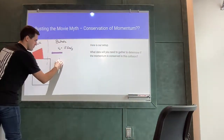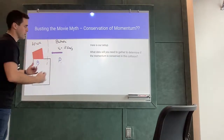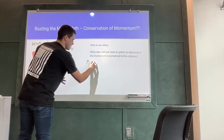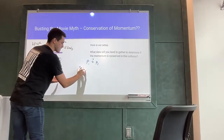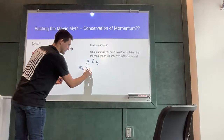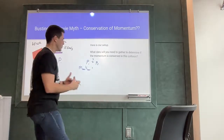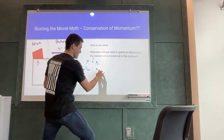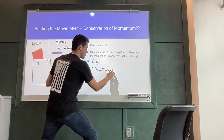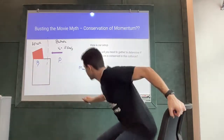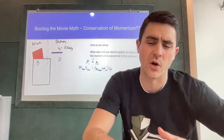We wanted to prove that the momentum initially was equal to the momentum finally. Essentially, was initial momentum equal to final momentum? So we wanted: the mass of the dart times the initial velocity of the dart should equal the mass of the dart plus the mass of the cup, multiplied by that final velocity.